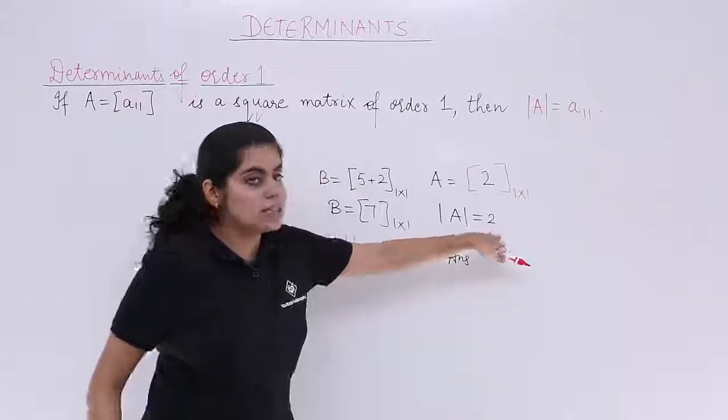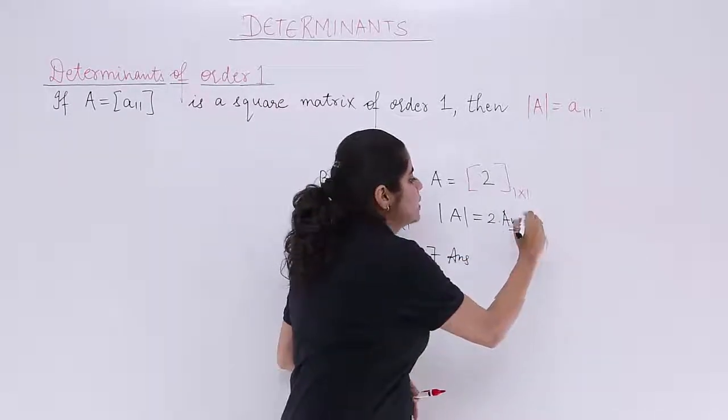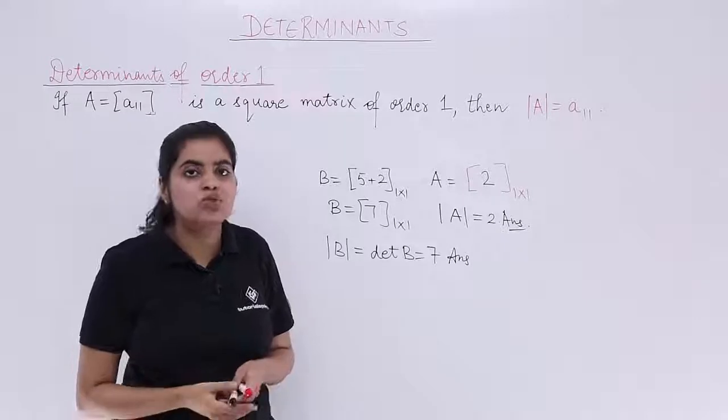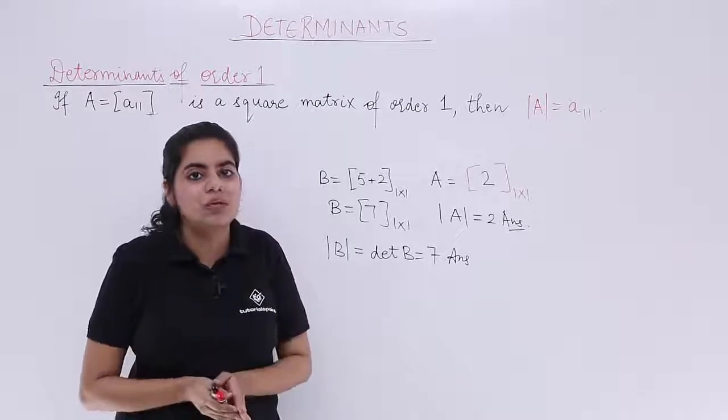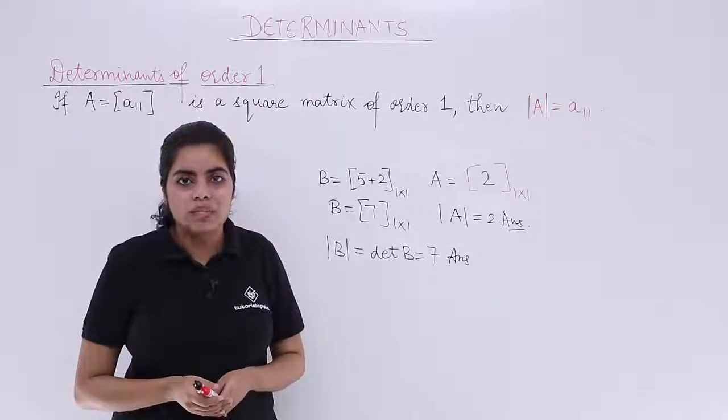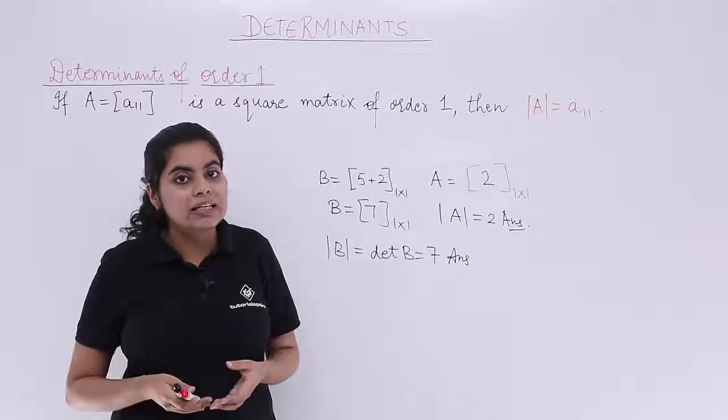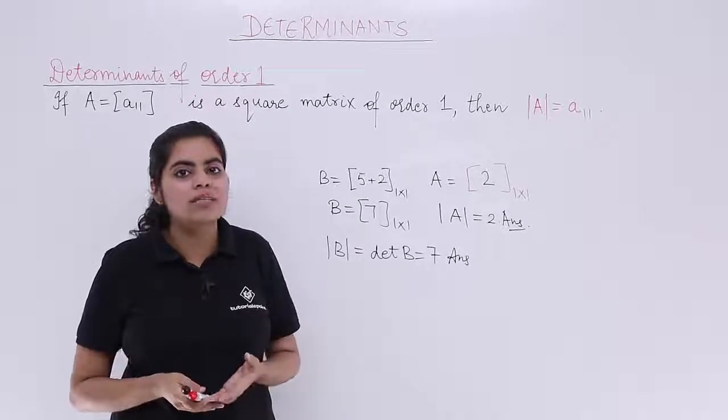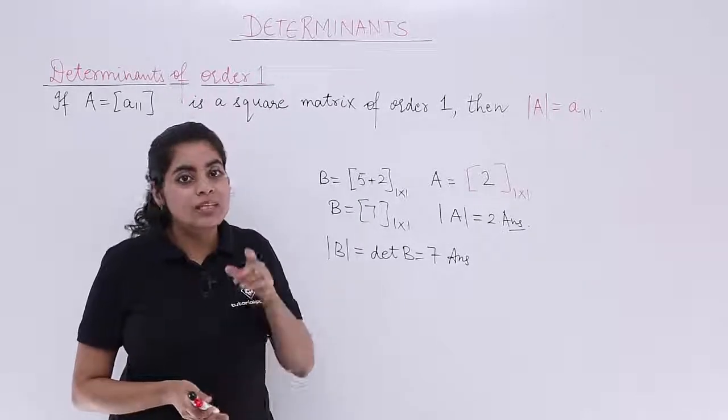And the answer here was 2 only. So in this video we saw a very simple subtopic. That means what is the value of determinant when the order of the square matrix is 1. And in such cases when the order is 1, the determinant value is the element itself.